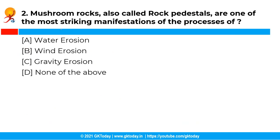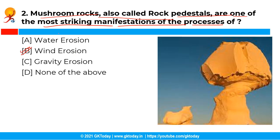Mushroom rocks, also called rock pedestals, are one of the most striking manifestations of the process of which among the following? The correct answer is option B, that is wind erosion. Mushroom rocks, also called rock pedestals, are one of the most striking manifestations of wind erosion. The term wind erosion refers to the damage of land as a result of wind removing soil from an area.